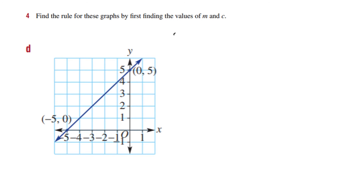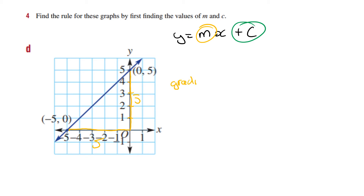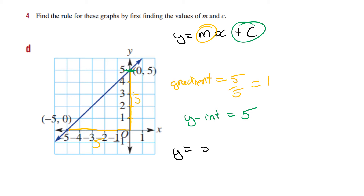This one: y equals mx plus c. The gradient — counting up 1, 2, 3, 4, 5 and across 5 — so gradient is 5 over 5, which equals 1. This is also positive. My y-intercept is way up here where it cuts the y-axis when x equals 0, and that's y equals 5. So y-intercept is 5, and my answer would be y equals x plus 5.